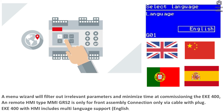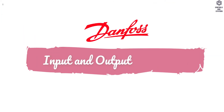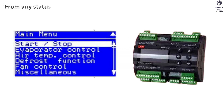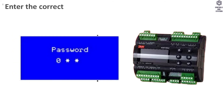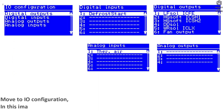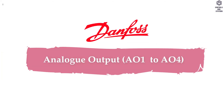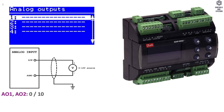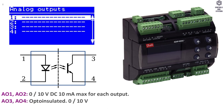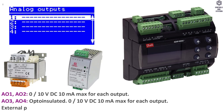The EKE400 with HMI includes multi-language support. For input and output navigation, from any status screen press Enter for 2 seconds to access the main menu, enter the correct password, and move to I/O configuration to see how many outputs and inputs your settings have provided. Analog outputs AO1 and AO2: 0 to 10V DC, 10mA maximum for each output. AO3 and AO4: opto-isolated, 0 to 10V DC, 10mA maximum for each output — note: external power supply 24V AC or 24V DC required.